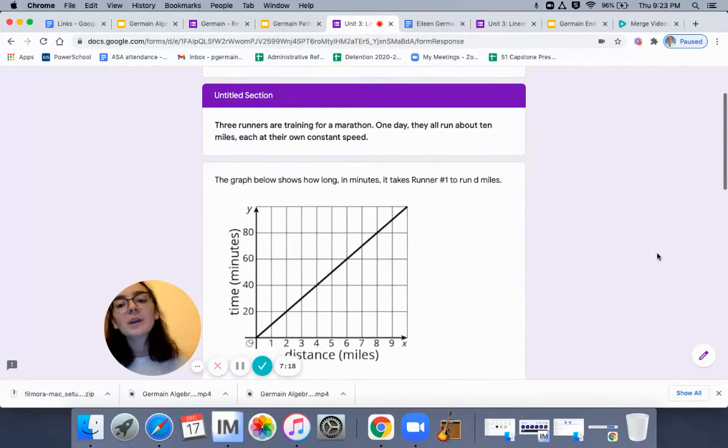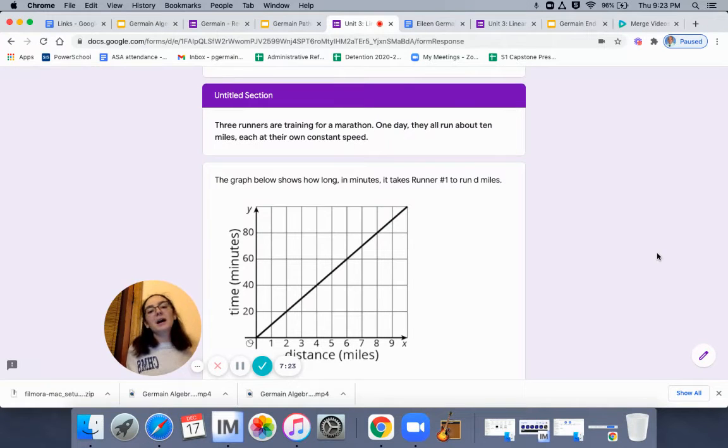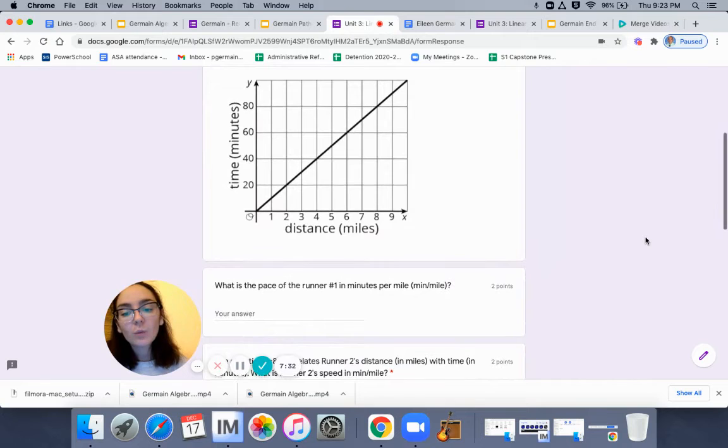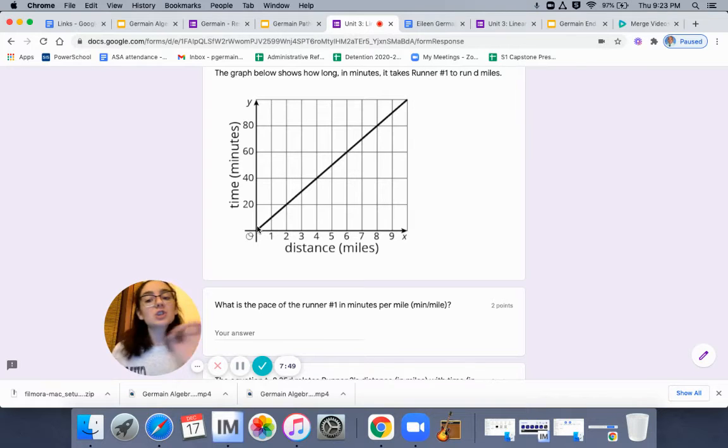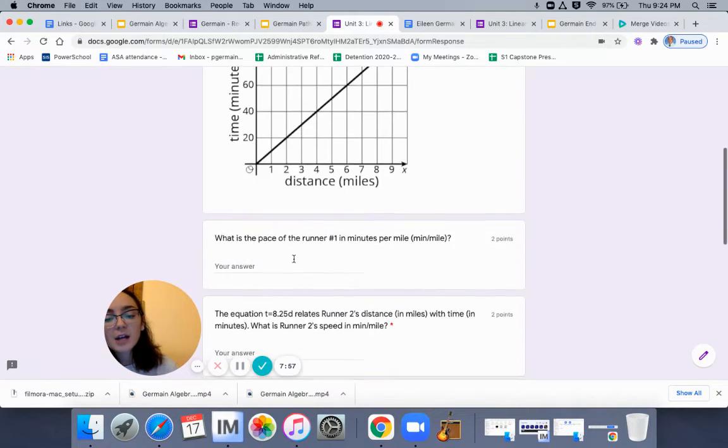Last section here. Last section is we have three runners that are training for a marathon. One day, they all ran about 10 miles, each at their own constant speed. So they're all going at a constant speed. What is the pace of runner number one in minutes per mile? So how many minutes does it take them to go one mile? That's the question. You might need to think about what is the slope of this line. You have to find what is the pace of the runner in minutes per mile. So what is your rise over your run.